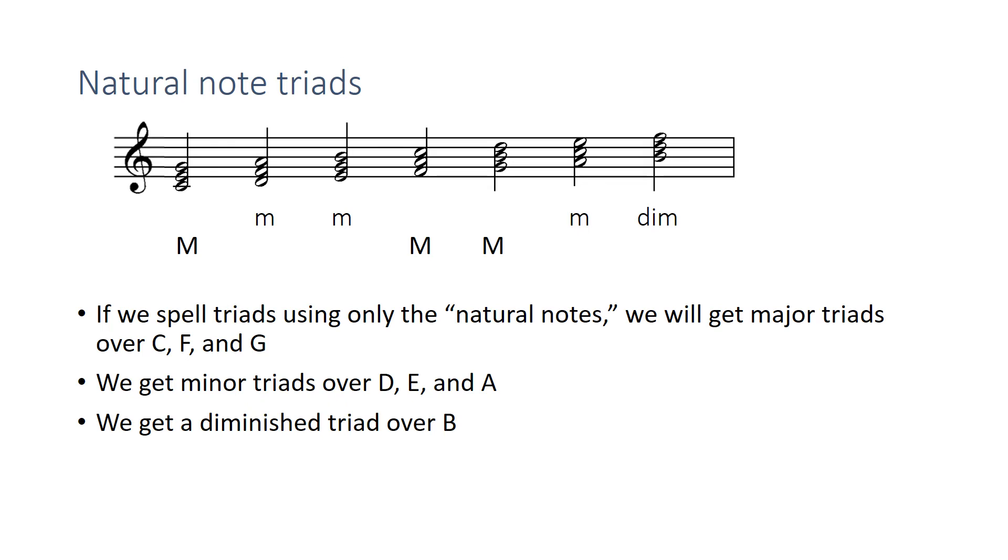So once again, we get a major on C, F, and G, minor on D, E, and A, and then B is diminished. And then resolve that back to a major. So you can use that as a reference point and then think of all other triads as variations on these basic types. So if I took my D minor triad and raised the third, it would become a D major triad, as we'll see in a minute.